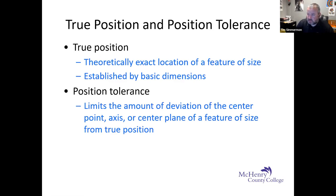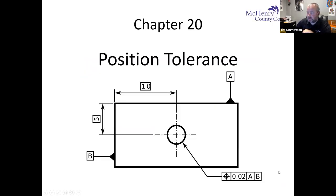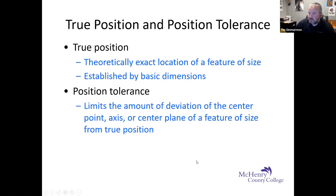Position tolerance is something a little bit different. That's the tolerance that limits the amount of deviation of the center point, axis, or center plane of a feature from its actual true position. If you say 'true position,' 99% of people know what you're talking about. I would read the GD&T as 'true position of 0.02 inches A to B,' but you'll get some GD&T snobs that'll say it's 'position tolerance' because of the definitions between the two.